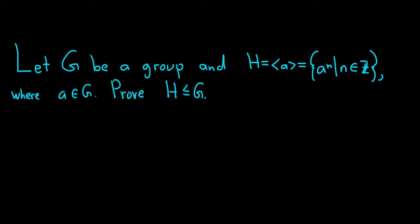Let G be a group, and we're going to define A to be the set given by this special notation — an angle bracket with an A and an angle bracket. It means all the powers of A, where A is some fixed element of G. So this is the set of all powers of an element of G.